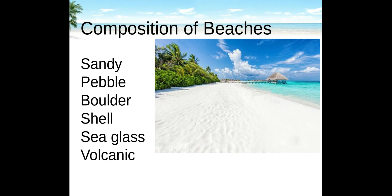Beach composition is always formed by locally available materials. It can be coarse or fine-grained, there can be significant biological materials, and the material is always moving along the shoreline. Sandy beaches are the most common beach type in the world, typically occurring on coasts that have low energy waves. They are susceptible to backwash erosion and powerful storms.